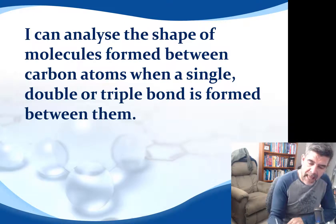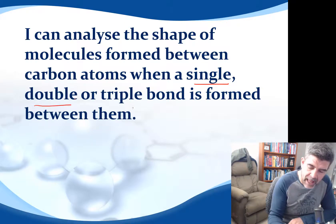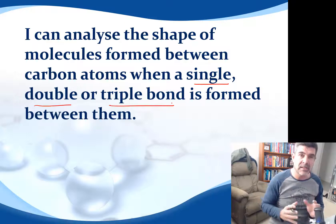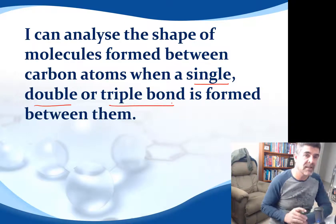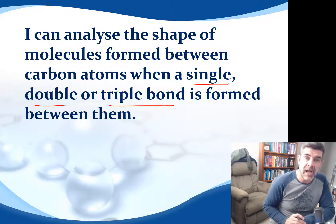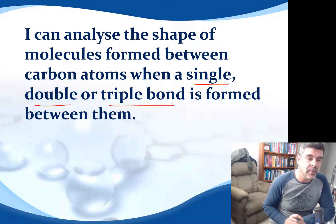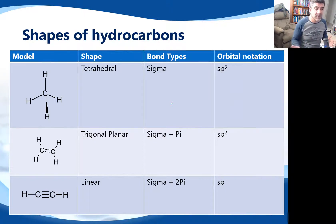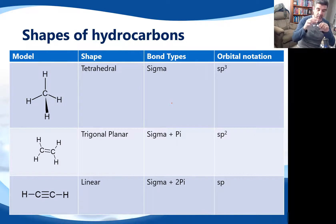We're going to be looking at the shapes of molecules for single, double and triple bonds, and just see what's actually happening around that central carbon for each of these different types of important compounds. There are three important shapes that we need to be aware of, and probably the simplest way to look at this is to start with the simplest of all.